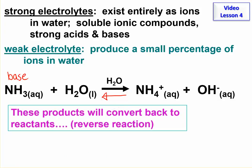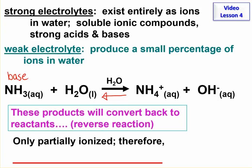When it's strong, there's only a forward arrow. When it's weak, there are two arrows showing it's reversible. So since it's only partially ionized, therefore it is a weak electrolyte.